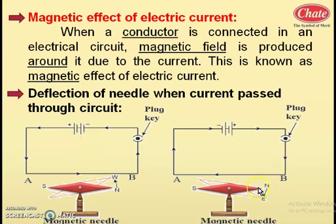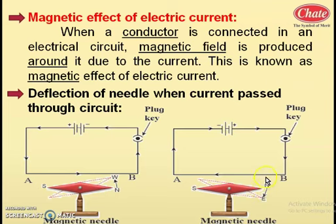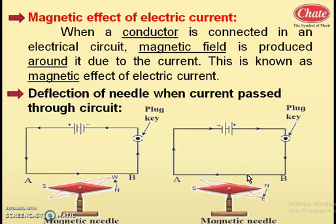Then the deflection in the magnetic needle also reverses. You can check the existence of the magnetic field by removing and plugging the key again and again. When current flows, the needle deflects to one side — either toward or away from the conductor. When you remove the key, it returns to its original position, meaning when no current flows through the conductor, there is no magnetic field and the magnetic needle does not deflect. Hence this heading is: deflection of needle when current passes through the circuit.